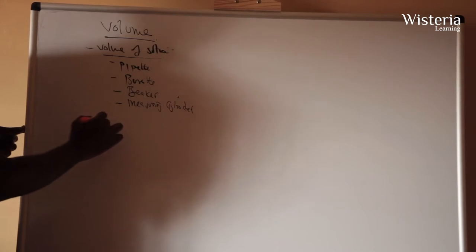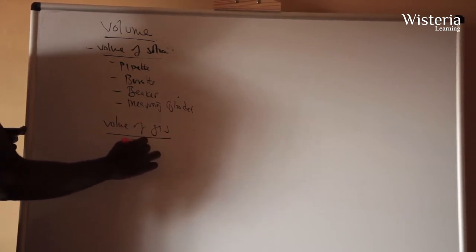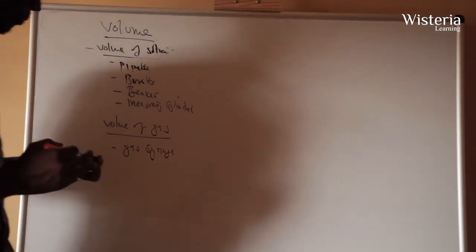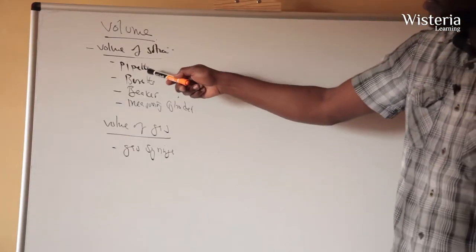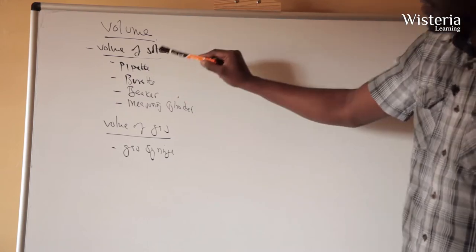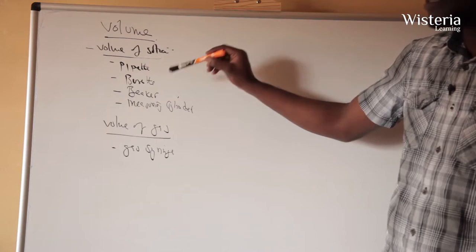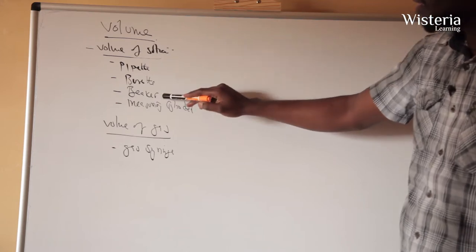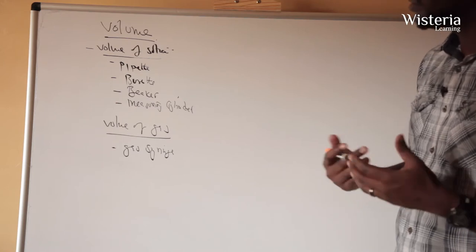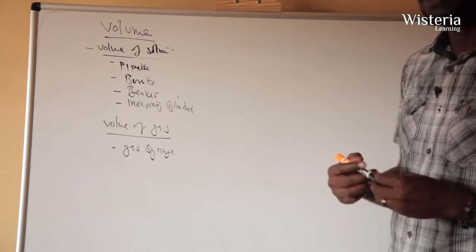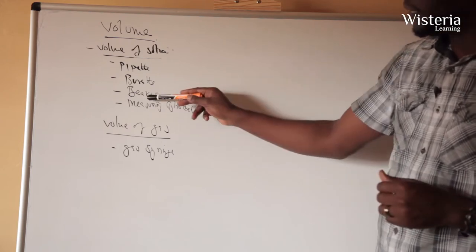The volume of a gas we can measure using a gas syringe. A pipette is used to measure a fixed volume accurately, a burette is used to measure an accurate volume, a beaker is used to estimate the volume of a solution or liquid, and a measuring cylinder is also used to estimate the volume. A measuring cylinder is more accurate than a beaker.